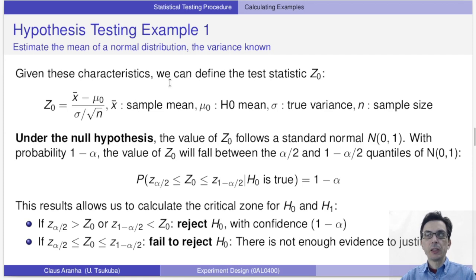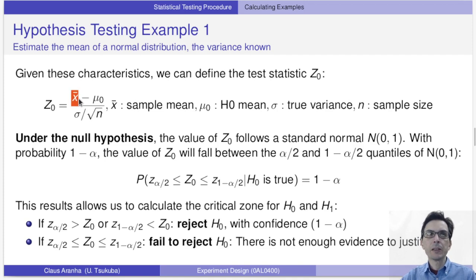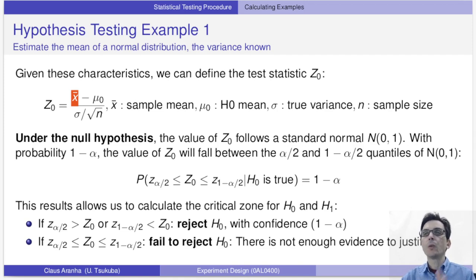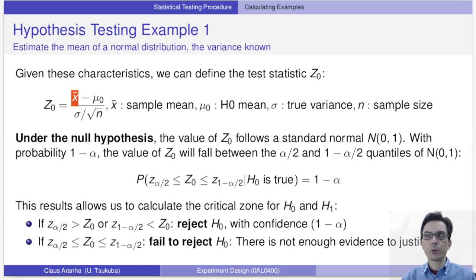We can use these numbers to calculate the test statistic Z0, calculated as x-bar minus mu-0 divided by sigma divided by the square root of n. This formula transforms x-bar into a variable Z0 following a standard normal distribution with mean 0 and standard error 1. The value of Z0 falls within the alpha quantile of the normal distribution with probability 1 minus alpha. This allows us to calculate our critical zone: if Z0 is smaller than the alpha/2 percentile of the normal distribution or greater than the 1 minus alpha/2 percentile, we reject the null hypothesis; otherwise we fail to reject it.